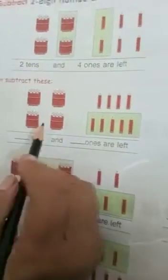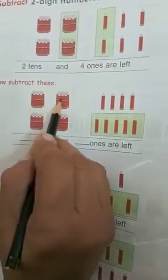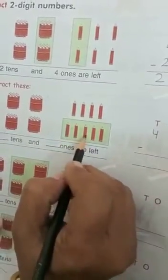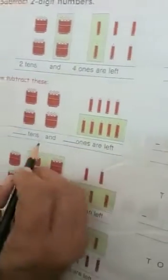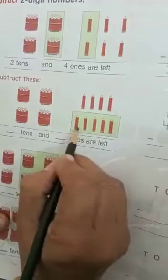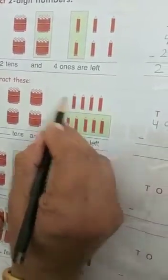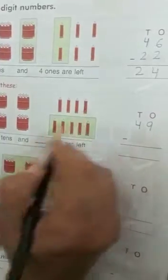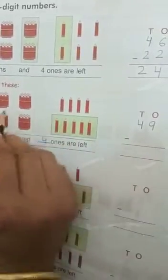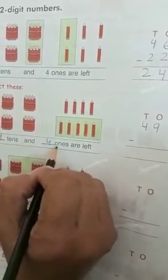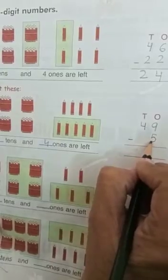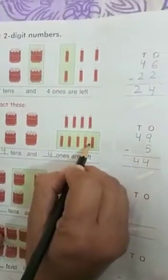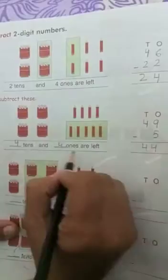Clear? Now next question. There are 4 tens and 9 ones. These 5 pencils we have already subtracted. How many pencils are left? 4 tens and 4 ones — 44 pencils are left. We subtracted only 5 pencils. The answer is 44.